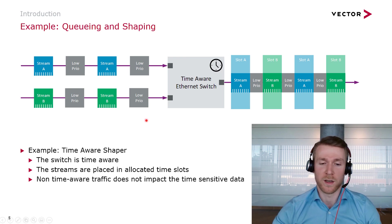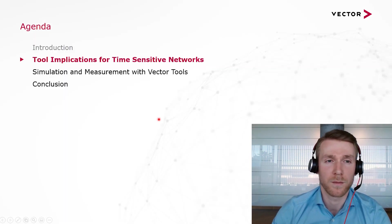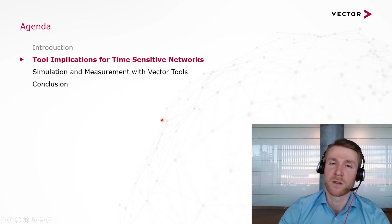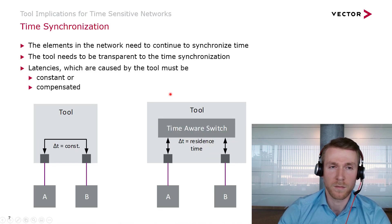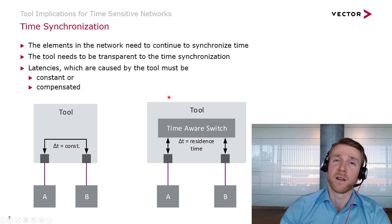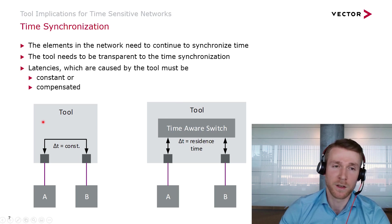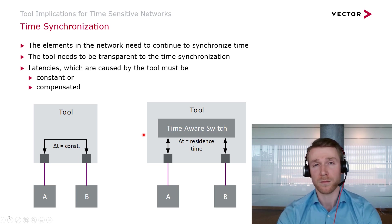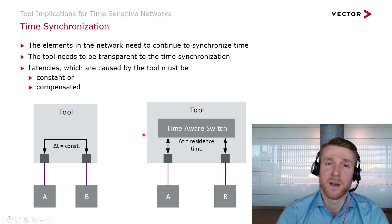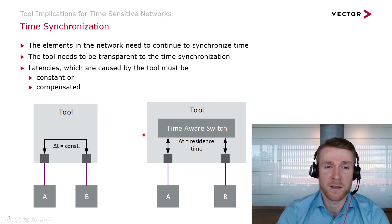I would now like to look at tool implications for time-sensitive networks. When bringing a tool into a TSN network, the tool must not cause a failure of the TSN mechanisms. I'll look at tool implications with regard to time synchronization and queuing/shaping. I'd like to discuss two ways of placing a tool in a TSN network: a tap configuration and a switched connection. Generally, network elements need to continue to synchronize time, so the tool needs to be transparent to time synchronization. Time synchronization relies on two procedures performed cyclically: measurement of end-to-end or peer-to-peer path delay between elements, and the master telling its time to the slaves so the slave can synchronize.